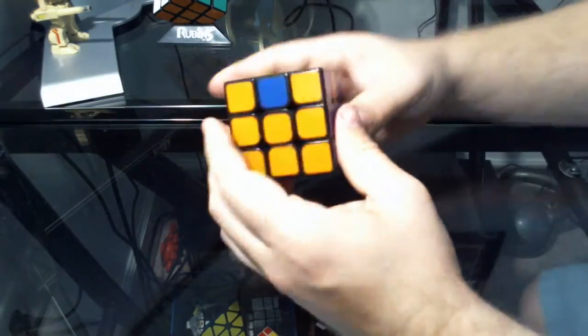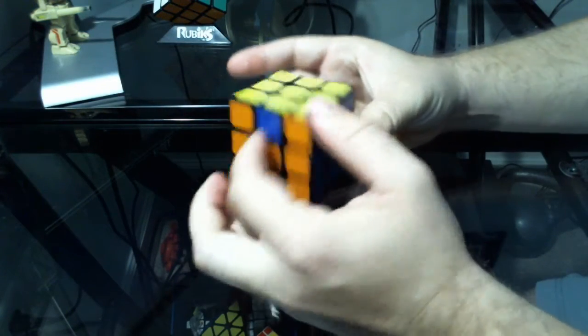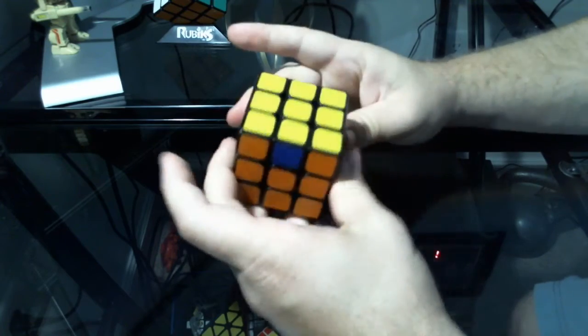So this algorithm is going to swap these two edges and these two edges, holding it like so.